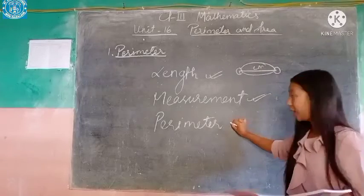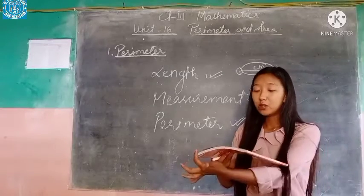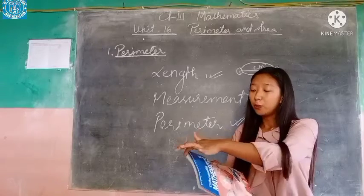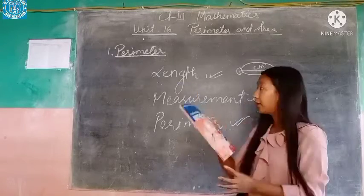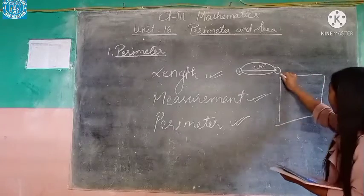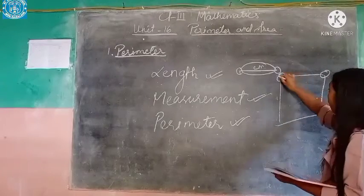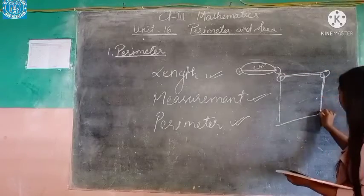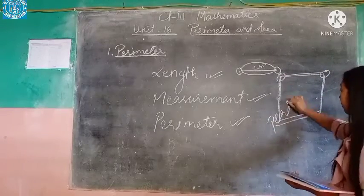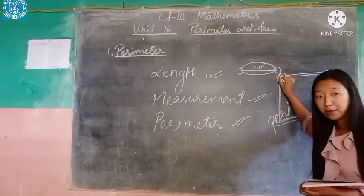And now the perimeter. So from this book, from this corner to this corner it is called the length. So covering all the lengths of the shape — the textbook here — from this end to this end, all these sides covered together are called the perimeter.